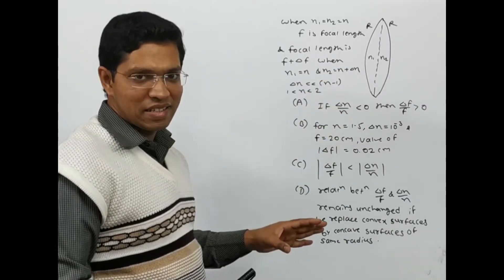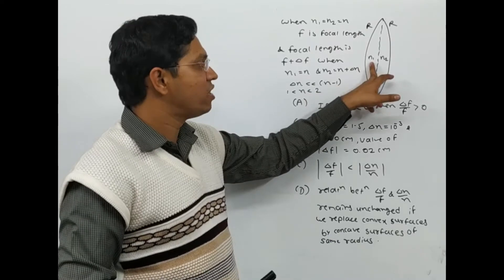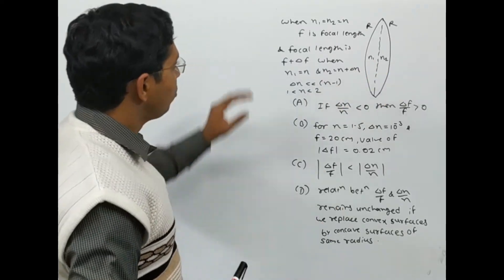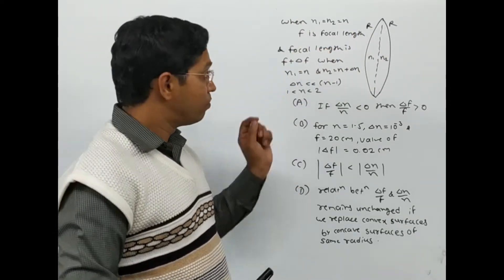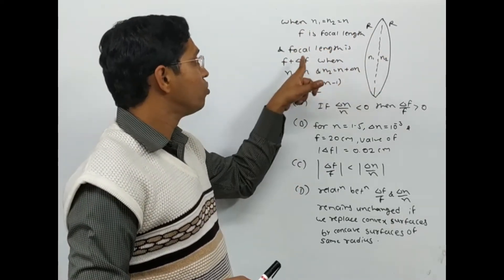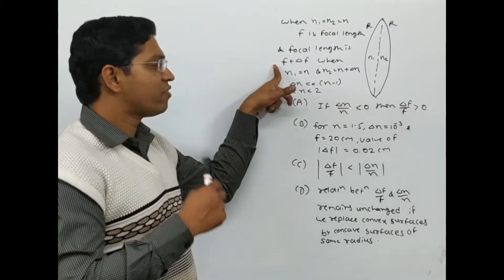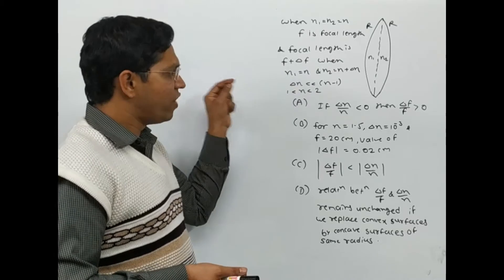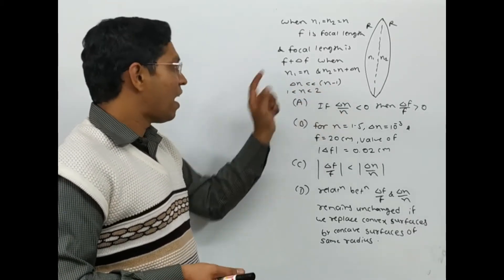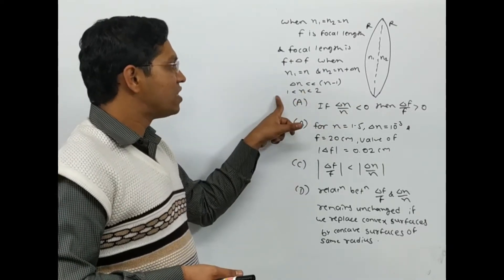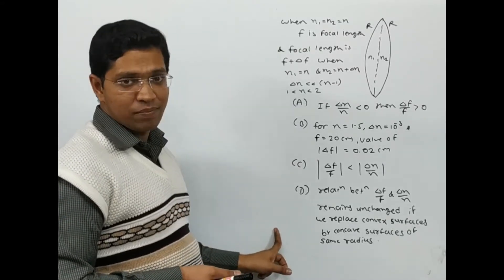A thin convex lens is made up of two different materials having refractive indices n1 and n2. When n1 equals n2 equals n, its focal length is f. But when n1 equals n and n2 equals n plus delta n, its focal length is f plus delta f. An important condition given is that delta n is much less than n minus 1, and n lies between 1 and 2. We need to check which options are correct.